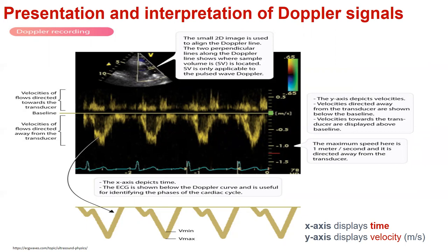The small two-dimensional image is used to align the Doppler line. The two perpendicular lines along the Doppler line show where the sample volume is located, and the y-axis depicts velocities. Velocities directed away from the transducer are shown below the baseline, and velocities towards the transducer are shown above the baseline.